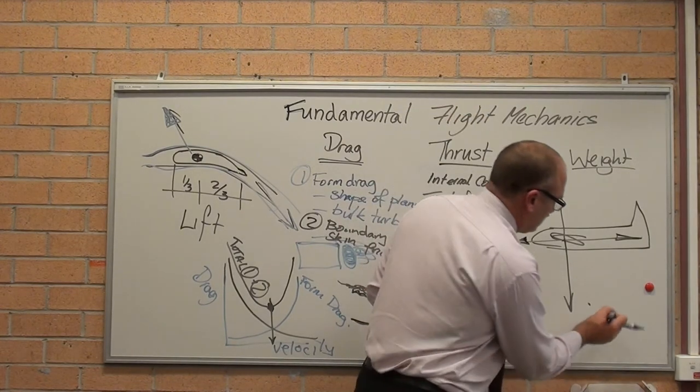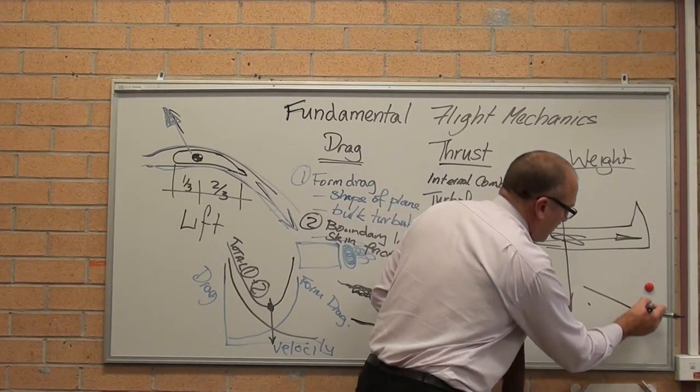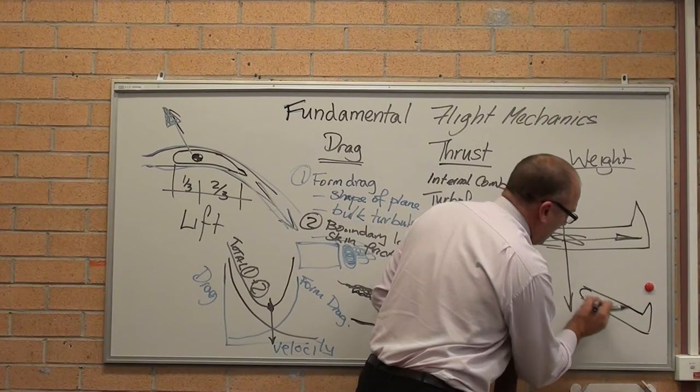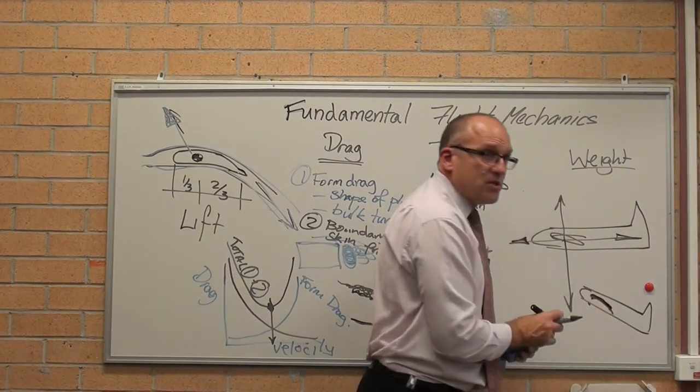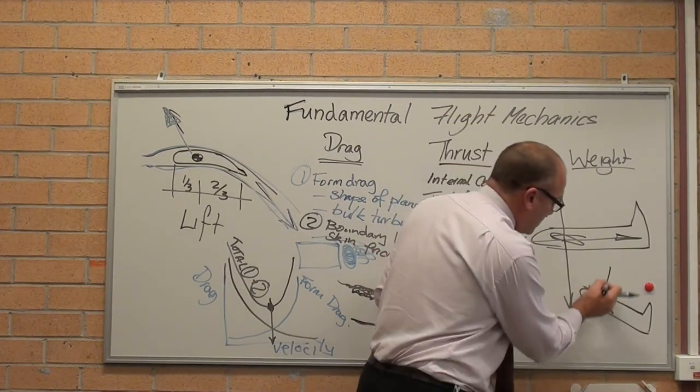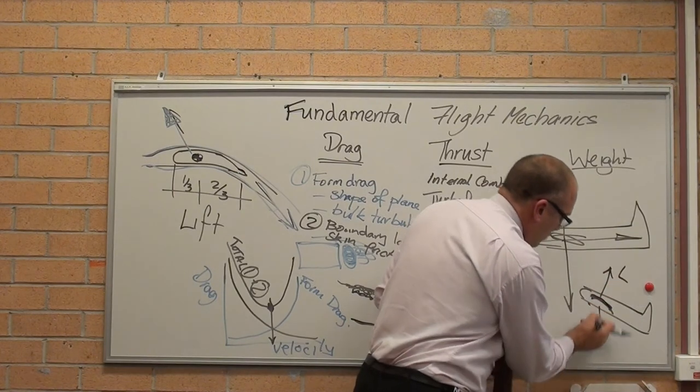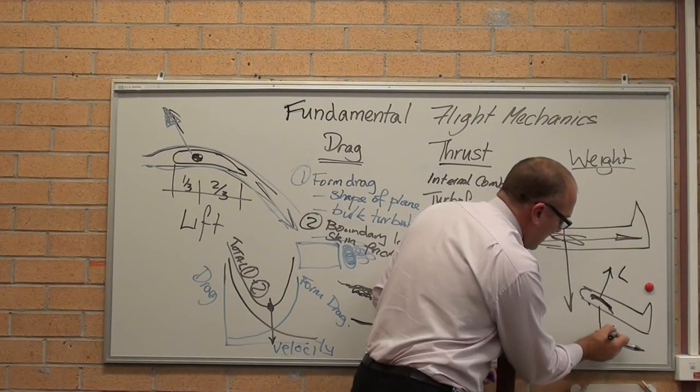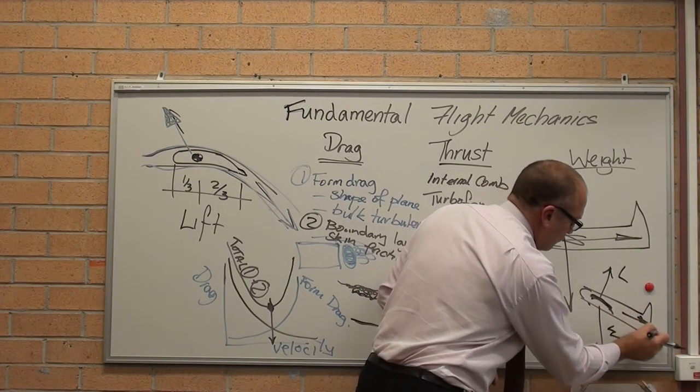Final thing, if I now draw my free body diagram with the plane at an angle, this is a space diagram. Lift is there, weight obviously still points down, drag, thrust.